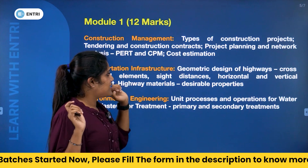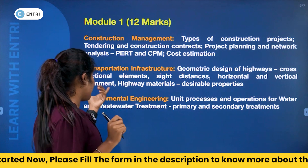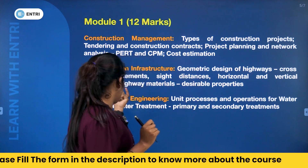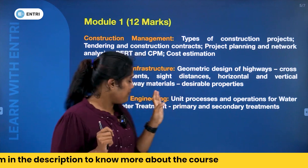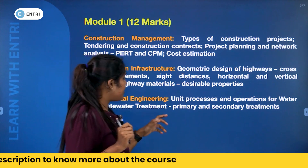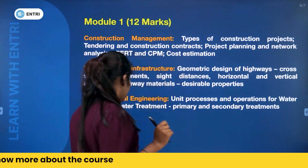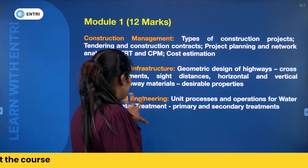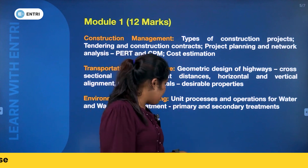Then transportation infrastructure — highways, cross-sectional elements, sight distance, horizontal and vertical alignment, highway materials and desirable properties. Then environmental engineering: unit processes and operations for water and wastewater treatment, primary and secondary treatment — just the basics.